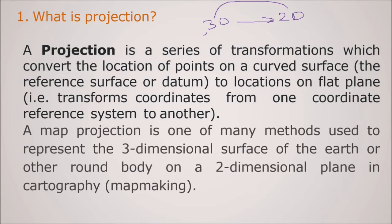It is a series of transformations which convert the location of points on a curved surface with certain reference surface or datum to location on a flat plane. And we transform coordinates from one coordinate reference system to the other. So map projection is one of many methods used to represent this 3D surface of the earth or any other round body on a 2D dimensional plane, which we use more often in cartography or map making.